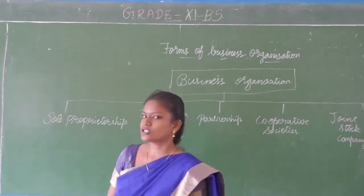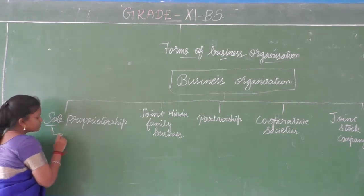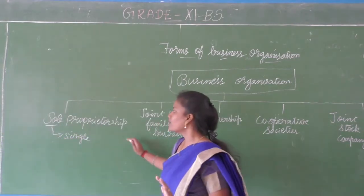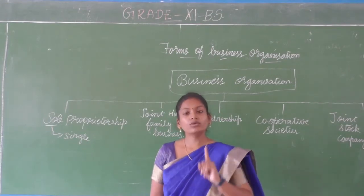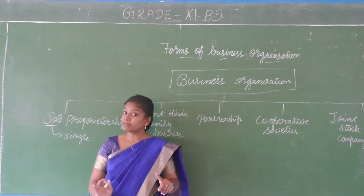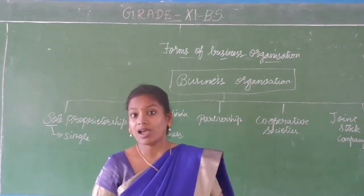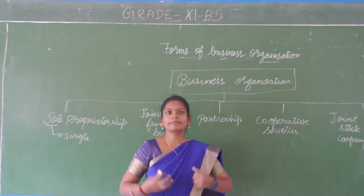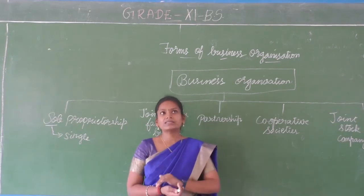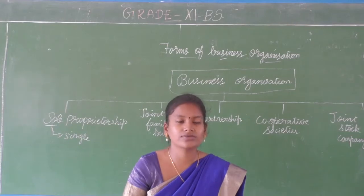Why is sole proprietorship called the simplest form? Because the meaning of the word 'sole' itself is single, and 'proprietor' means owner. So this business is handled by only one person - that is why it is the simplest form. The features, merits and limitations will be discussed in detail. It does not have many legal formalities and does not involve many people. When fewer people are involved, things become simpler - that is why we call it the simplest form.